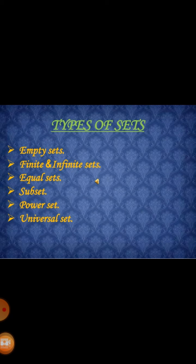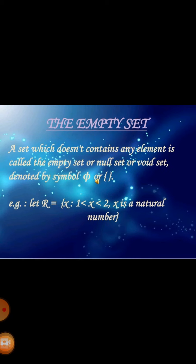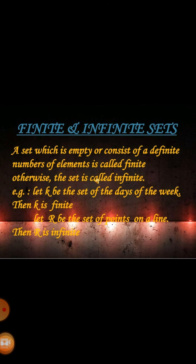First of all, we discuss empty set. A set which does not contain any element is called the empty set or null set or void set, denoted by the empty set symbol. For example, set R: the set x such that 1 < x < 2 where x is a natural number is an empty set.